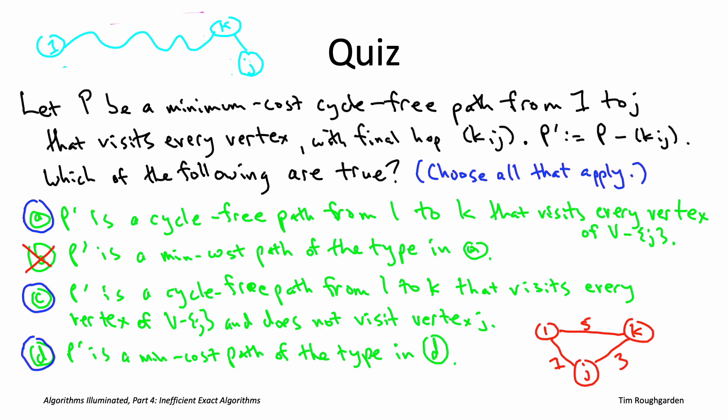Suppose for contradiction, that wasn't the case. Suppose there was actually a cheaper path than this prefix that meets the exact same set of constraints. So starts at one, goes to k, no cycles, visits exactly the vertices of v minus j, and does not visit j. Let's draw that path in magenta. Well, if the cost of the magenta path is less than the cost of the light blue path, then the cost of the magenta path plus that final hop k, j is less than the cost of the light blue path plus that final hop k comma j. In other words, this magenta path together with that final hop k comma j, that's a better path than we started with. Now, it's very important that the magenta path does not use the vertex j. That's one of our constraints. If the magenta path did use the vertex j, then when we put in that final hop k comma j, that would make a cycle. That would be the second visit to j, so we would not be satisfying the cycle-free condition.